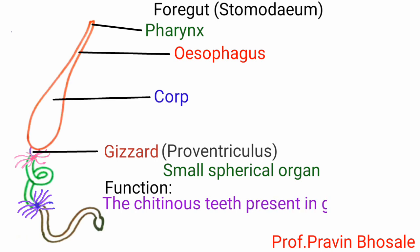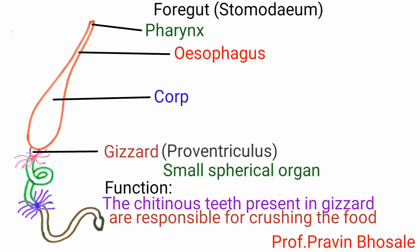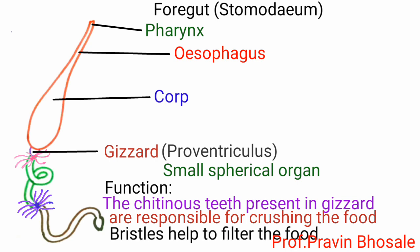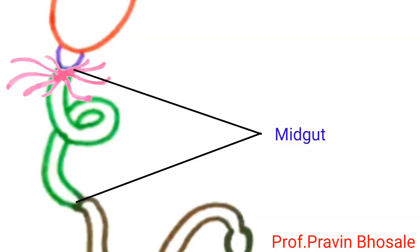The function of the gizzard: the cutaneous teeth present in the gizzard are responsible for crushing the food, and the bristles help to filter the food.